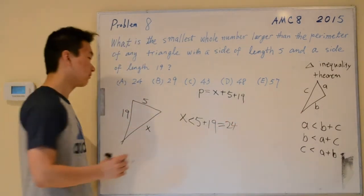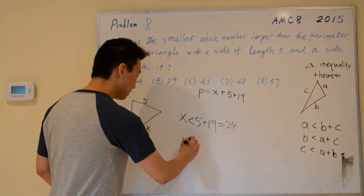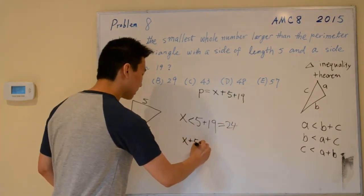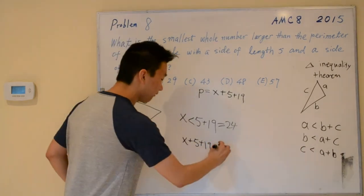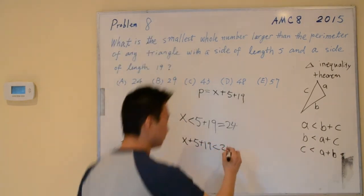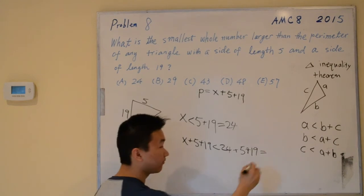Let's add 5 plus 19 to both sides. So x plus 5 plus 19 is less than 24 plus 5 plus 19, which simplifies to 48.